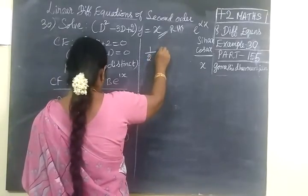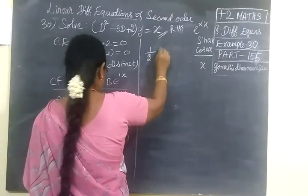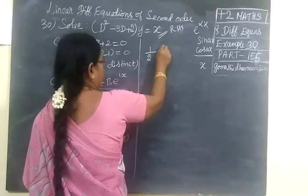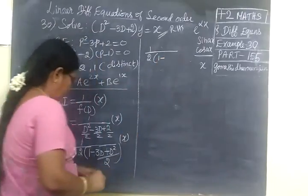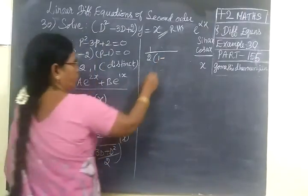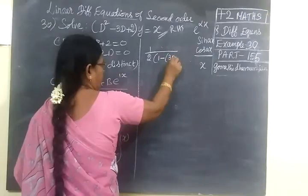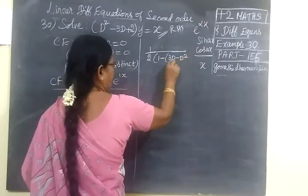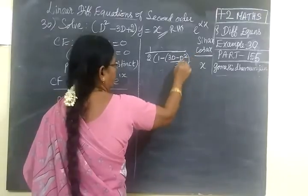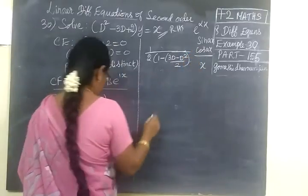Now you take this to the numerator. Before that, you take minus also common: 1 minus 3D minus D squared by 2.